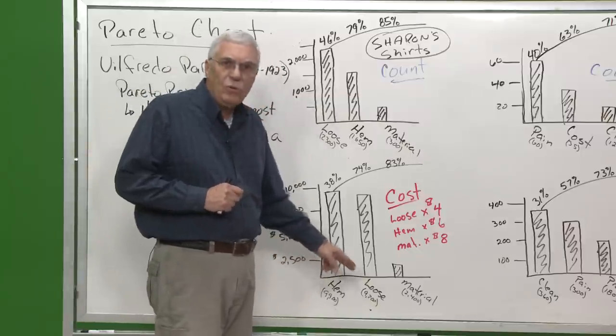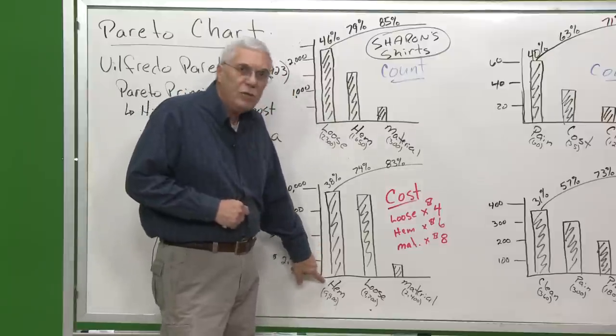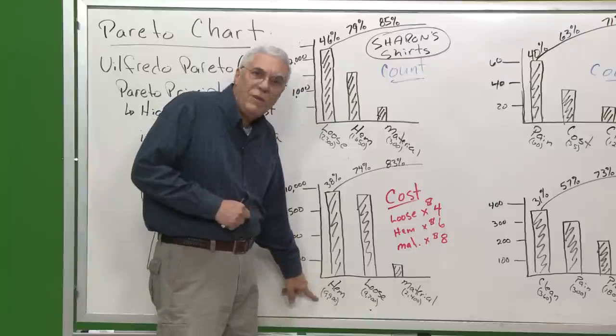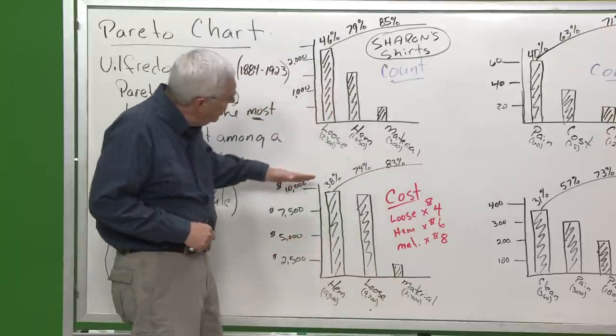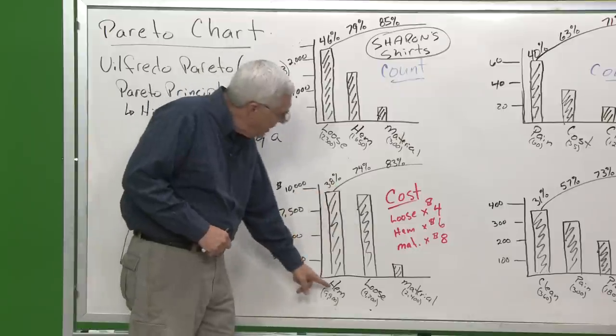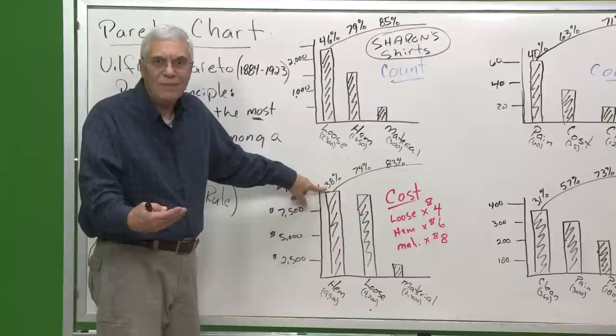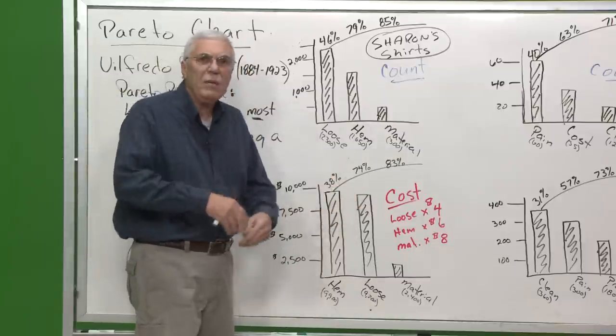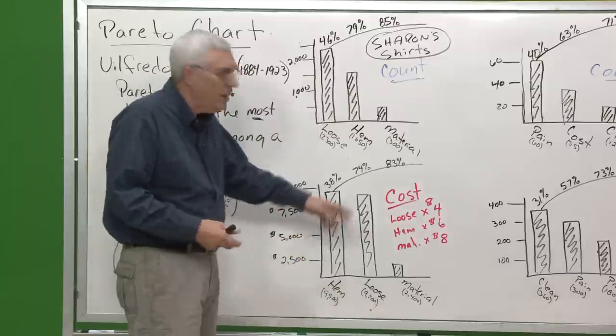So now that I've got these cost totals, I'm going to order them from most to least. And obviously you can see hems is costing me the most. I have more loose threads than I do hems, but hems is a more expensive item to fix. Then loose threads comes in, and then materials. I'm going to do exactly the same thing, plot the costs as a bar, generate my Pareto line. So if I take care of hems, 38% of my repair costs are going to be impacted. If I can take care of these two together, 74% of the money I'm spending to repair defective material is going to hopefully go away.